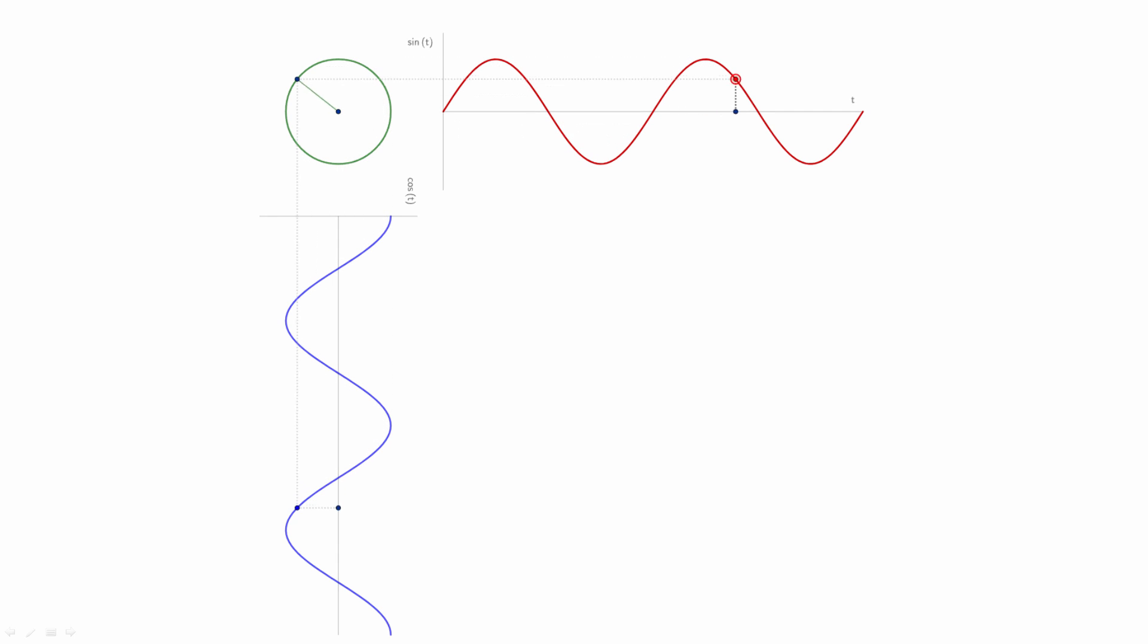When we plot a graph of the horizontal position of the point against time, a similar shape is produced, but it differs from the sine wave by a quarter of a turn of the circle. This is called a cosine wave.